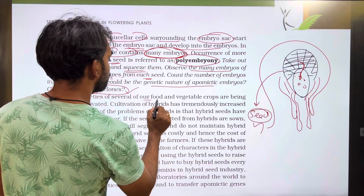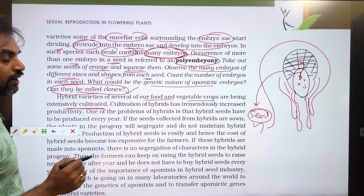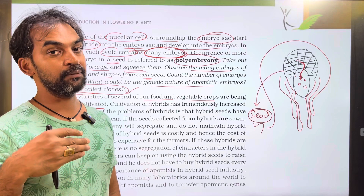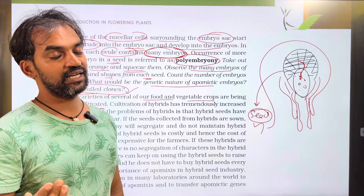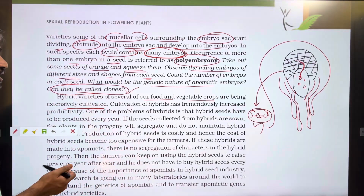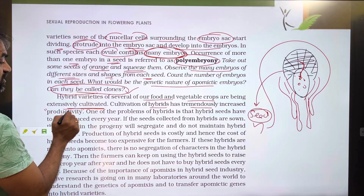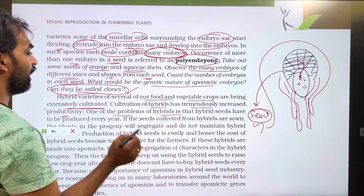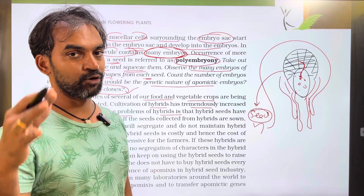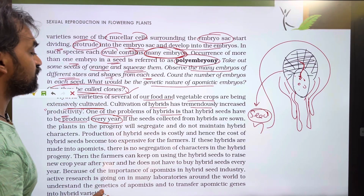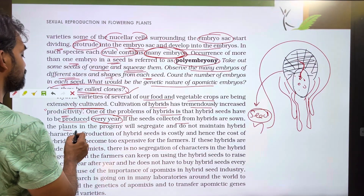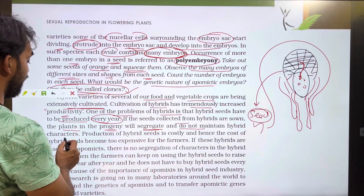Hybrid varieties of several of our food and vegetable crops are being extensively cultivated. Cultivation of hybrids has tremendously increased productivity. However, one of the problems of hybrids is that hybrid seeds have to be produced every year in the laboratory. If we collect seeds from hybrids, the plants in the progeny will segregate and do not maintain hybrid characters.